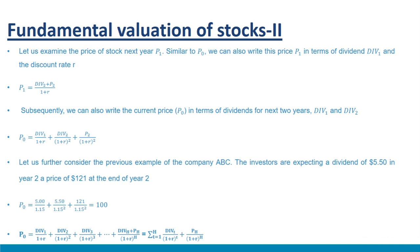Consider company ABC with investors expecting a dividend of $5.50 in year 2 and a price of $121 at the end of year 2. The current price can be estimated as: P₀ = 5/(1.15) + 5.5/(1.15)² + 121/(1.15)² = $100. This expansion can be further extended to 3, 4, or more periods. For a large horizon of H periods with expected price PH at the end: P₀ = Σ Divₜ/(1+R)ᵗ for t=1 to H, plus PH/(1+R)^H — representing the discounted sum of dividends for years 1 to H plus the present value of the sale price.